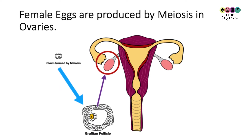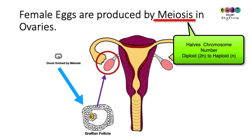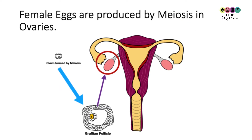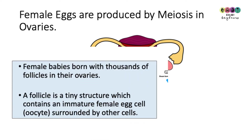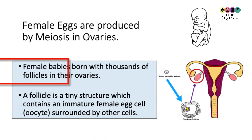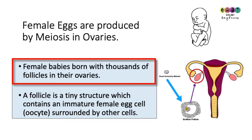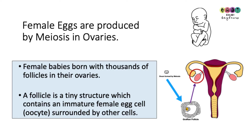Let's begin with the ovaries. The female eggs are produced by meiosis in the ovaries — remember, meiosis goes from diploid to haploid, halving chromosomal number. The female eggs are formed in structures that develop in the ovaries known as Graafian follicles. Baby girls are born with thousands of these follicles in each ovary. A follicle is a tiny structure containing an immature female egg called the oocyte, surrounded by other cells.